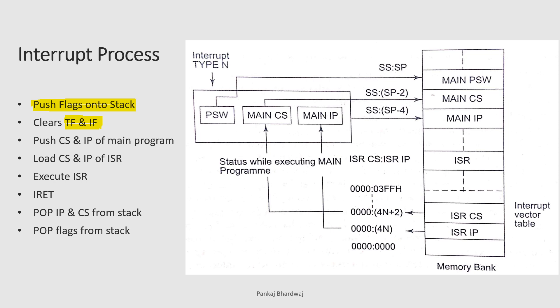Next, the code segment and instruction pointer, which together produce the physical memory location address, are pushed onto the stack. The main program's CS and IP — that is, the address of the instruction currently being executed — are given by the code segment address register value plus the instruction pointer. These two values, two bytes each (total four bytes), are transferred and pushed into the stack memory.